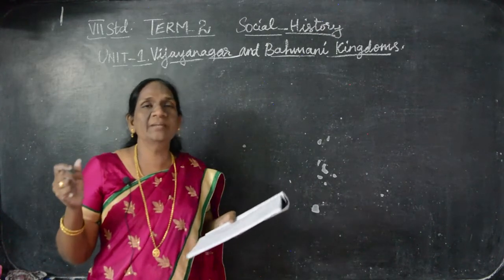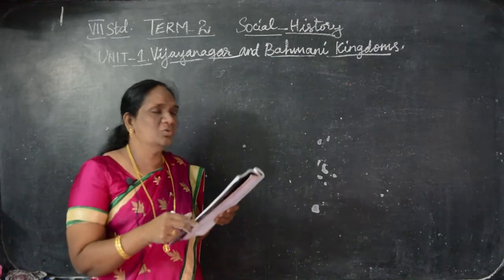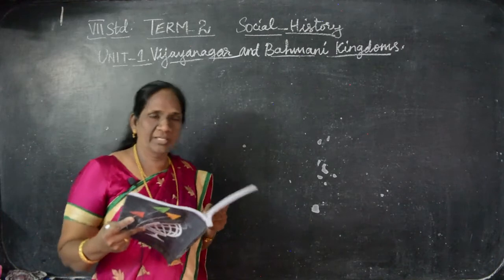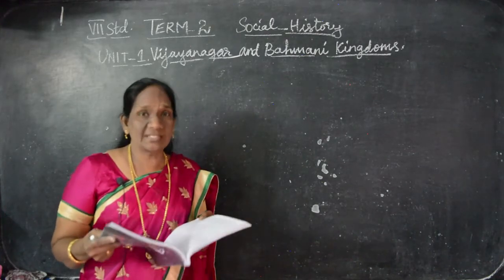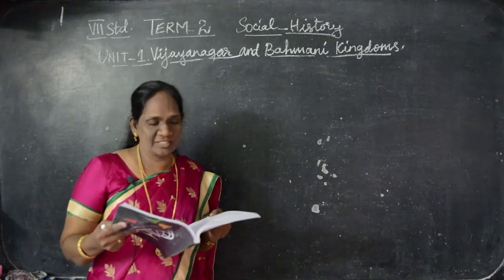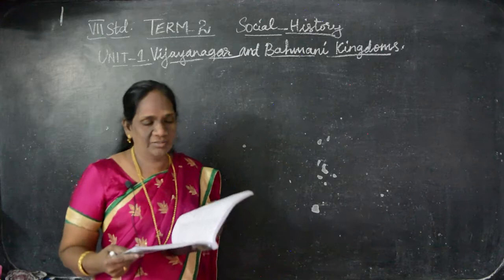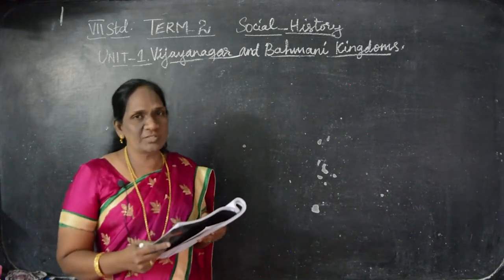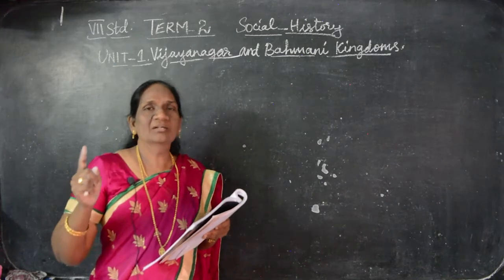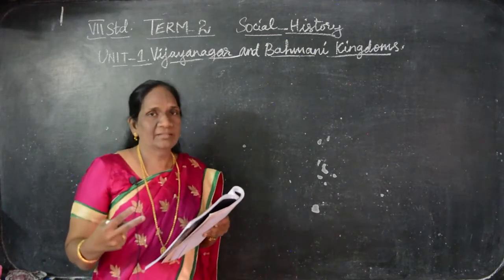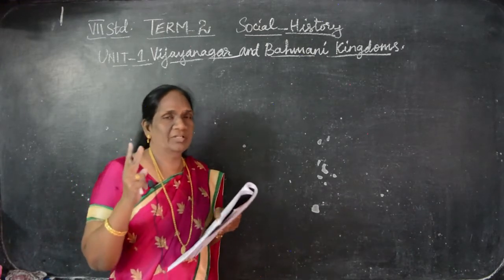In the previous class I gave you the evaluation answers — the book back exercise answers. Choose the correct answer I gave you — that is Roman numeral 1 and Roman numeral 2. Fill in the blanks, learn. Then the third one — match the following, I gave you the answers. Roman numeral 4, that is assertion A. Then Roman numeral 5 — true or false, that also I gave you the answers. Then Roman numeral 6, answer in 1 or 2 sentences — for that I gave you only one answer. Today I am going to give from the second answer, that is Roman numeral 6, answer in 1 or 2 sentences. Shall I write it on the board then? Okay, are you ready?